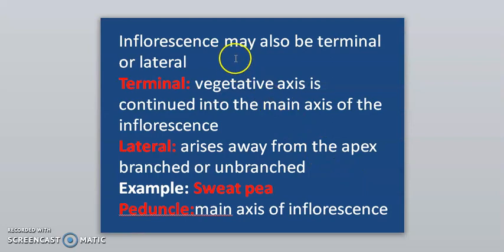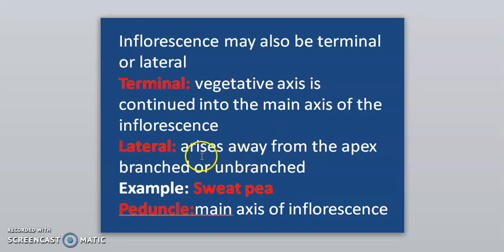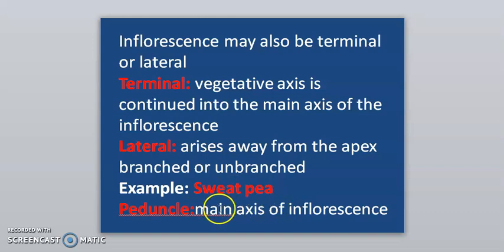Inflorescence may be terminal or lateral. Terminal inflorescence is that in which the vegetative axis is continued into the main axis of the inflorescence. Lateral inflorescence is that which arises from the apex; it may be branched or unbranched. Example of lateral inflorescence is sweet pea. The main axis of inflorescence is called the peduncle.